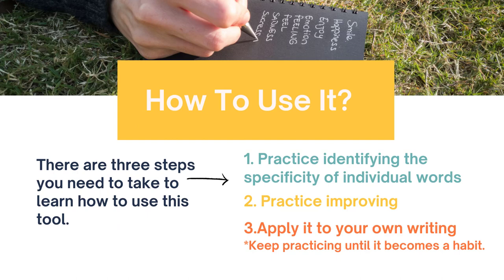There are three steps to really creating a habit of being more specific in your writing. The first step is to practice identifying the specificity of individual words — being able to look at one word and say this is quite general, this is level one or level two. The second step is to practice improving these words, phrases, or maybe whole sentences. Then we want to apply it to our own writing — that's really where it begins to take shape as a habit.